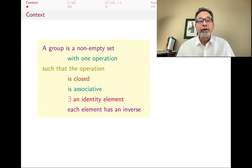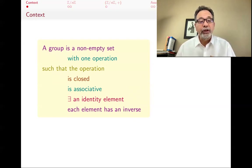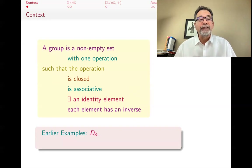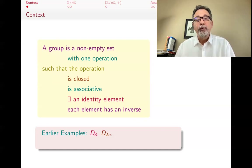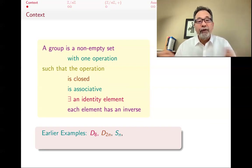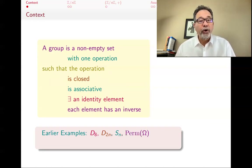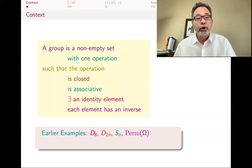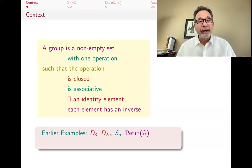By looking at that definition, it might not be clear to you that groups appear all over the place in mathematics. We have started this series of lectures by looking at examples. The examples in previous videos have been D8, the symmetries of a square. The more general version, D2n, is the symmetries of a regular n-gon. Another set of examples were symmetric groups Sn — the permutations of 1 through n. That was a special case of Perm(Ω), the set of one-to-one onto functions from any set Ω to itself. Ω could be an infinite set and you would still get a group.